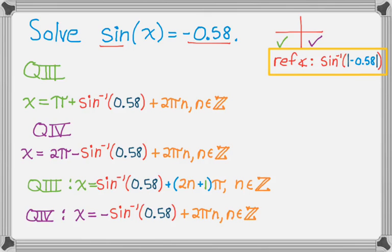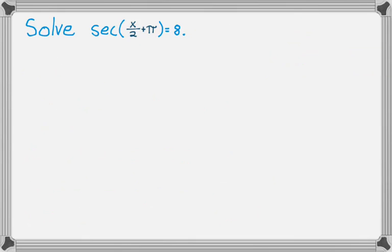Let's take a look at another one. Well, actually, I just want to highlight that the key thing here is the reference angle. So the reference angle is the inverse sine of the absolute value of negative 0.58, and that's going to save you some trouble.